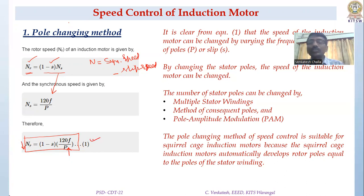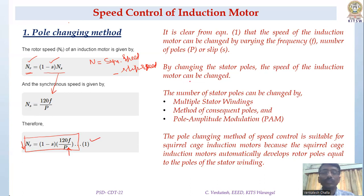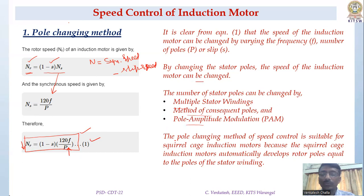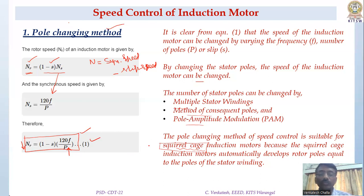By changing the stator poles, the speed of the induction motor can be changed. There are three techniques to obtain this change in poles: multiple stator windings, method of consequent poles, and pole amplitude modulation. The pole changing method is suitable for squirrel cage induction motors because the squirrel cage rotor automatically develops the same number of poles as the stator — no arrangements at the rotor side are needed, which simplifies the speed control method.